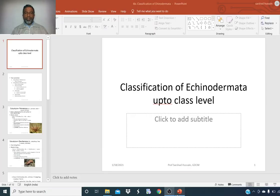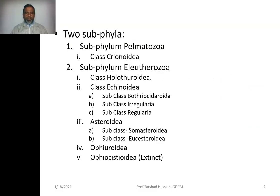Dear students, let us discuss classification of Echinodermates up to class level. There are two sub-phyla of phylum Echinodermates. Number one, Pelmatozoa. Number two, Eleutherozoa.